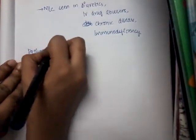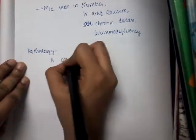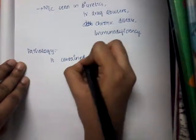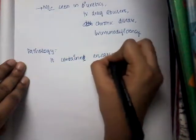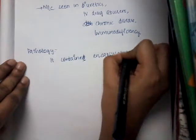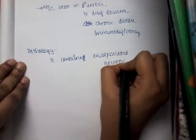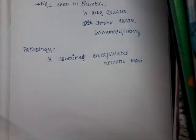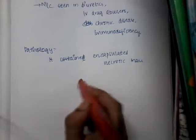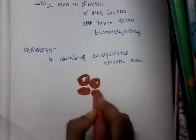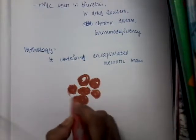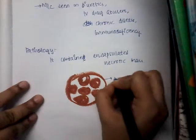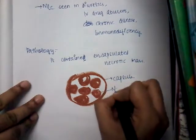Regarding pathology, the carbuncle is an encapsulated necrotic mass of tissue. As you can see here, it is a necrotic mass that is encapsulated — this outer layer is the capsule, and inside is the necrotic mass.